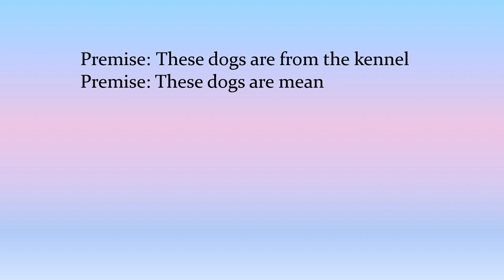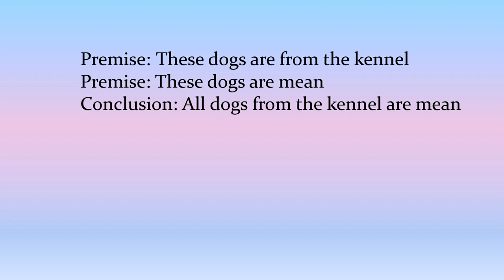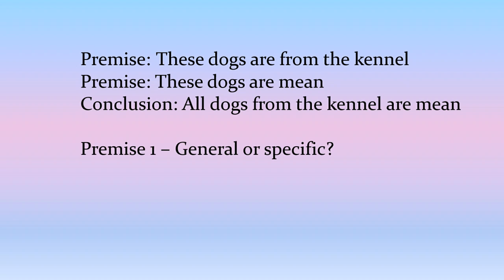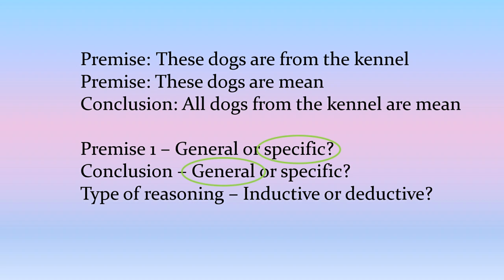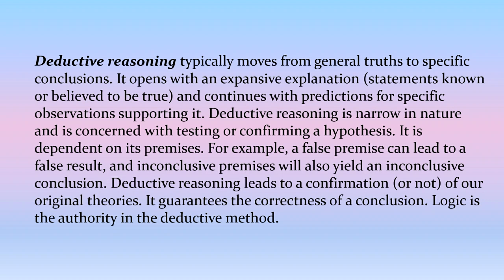Now the reverse: premise one — these dogs are from the kennel. Premise two — these dogs are mean. What's your conclusion? Write it down. Hopefully you wrote something like 'all dogs from the kennel are mean.' Is premise one general or specific? That's specific. Is the conclusion general or specific? That's general — we're talking about all dogs. So what type of reasoning is this? We're going from specific to general, so that's inductive reasoning.